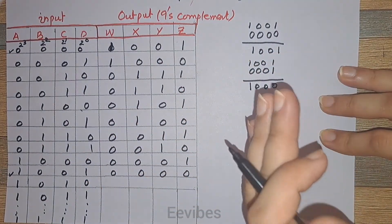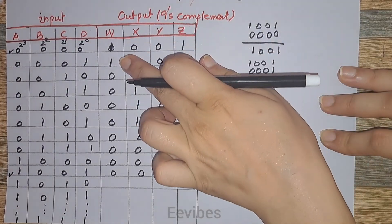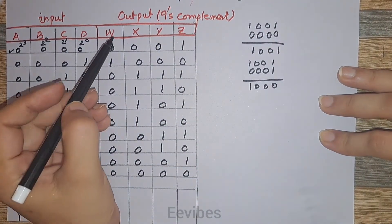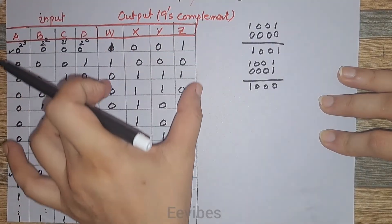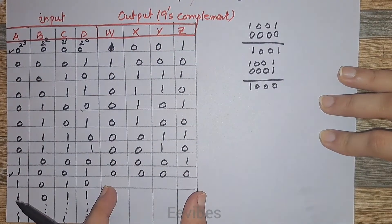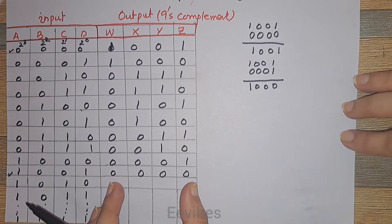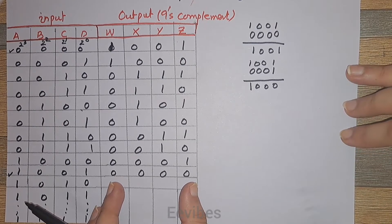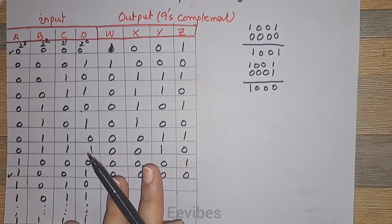Once you are done filling this input-output table, the next step is to use the Karnaugh map for determining the expressions for the output variables W, X, Y, and Z, where each bit represents an individual output function. This function can be determined using the Karnaugh map.